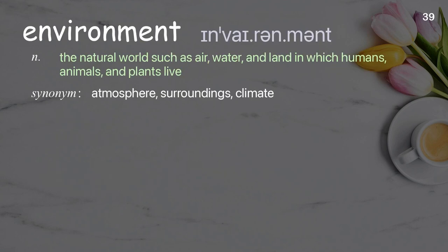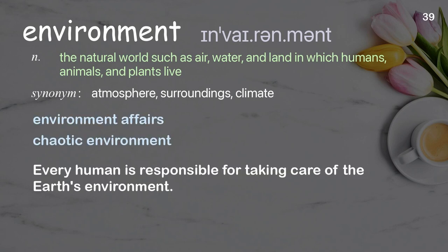Environment: the natural world such as air, water, and land in which humans, animals, and plants live. Examples: environment affairs, chaotic environment. Every human is responsible for taking care of the Earth's environment.